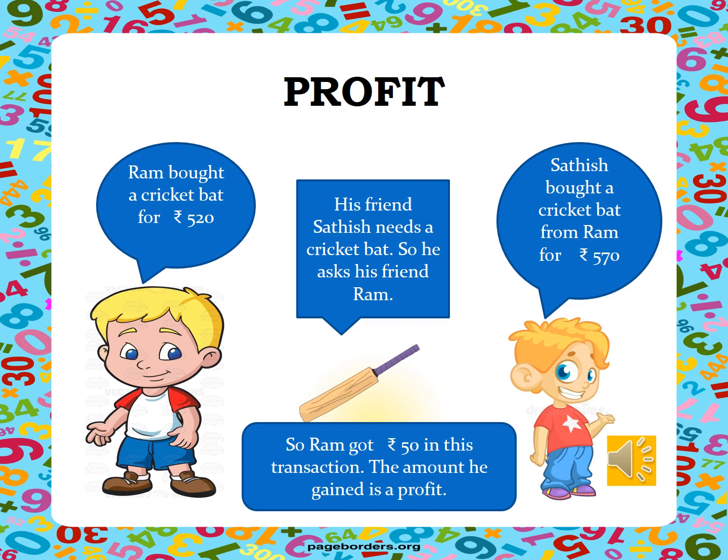How can they say so? Yes, children. Ram bought the cricket bat for Rs. 520 but he sold it for Rs. 570. So the selling price is more than the cost price. As we all know, when the selling price is more than the cost price, there we have a profit. So here Ram got a profit of Rs. 50. Can you all understand, children?